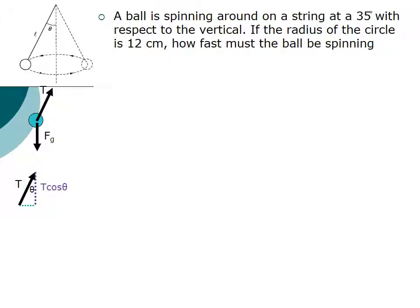When we do our work correctly, the vertical component becomes T cosine θ, because the vertical component is adjacent to the angle θ, and the horizontal component becomes T sine θ.